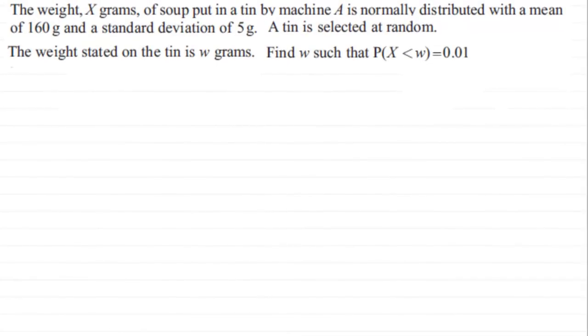Now, this is a typical question where we've got to work backwards in the normal distribution. Just to recap, we've got the weight X grams of soup put in a tin by machine A is normally distributed with a mean of 160 grams and a standard deviation of 5 grams. A tin is selected at random. The weight stated on the tin is W grams and we've got to find the value of W such that the probability that X is less than W is equal to 0.01. So if you want to have a go at this, pause the video, come back when ready and check your solution with mine.